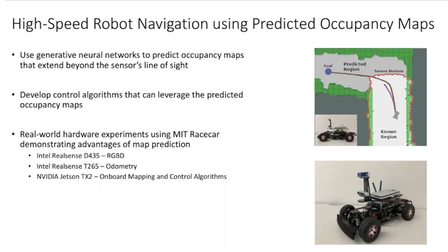The basic goal of this paper is to develop generative neural networks that allow us to predict occupancy maps that extend beyond the line of sight of the sensor.